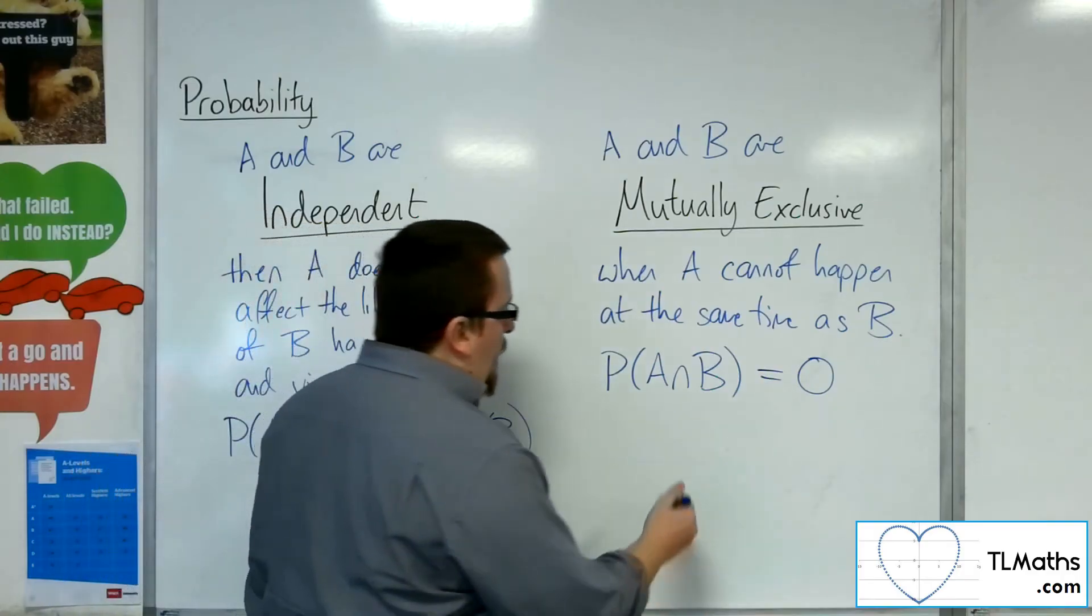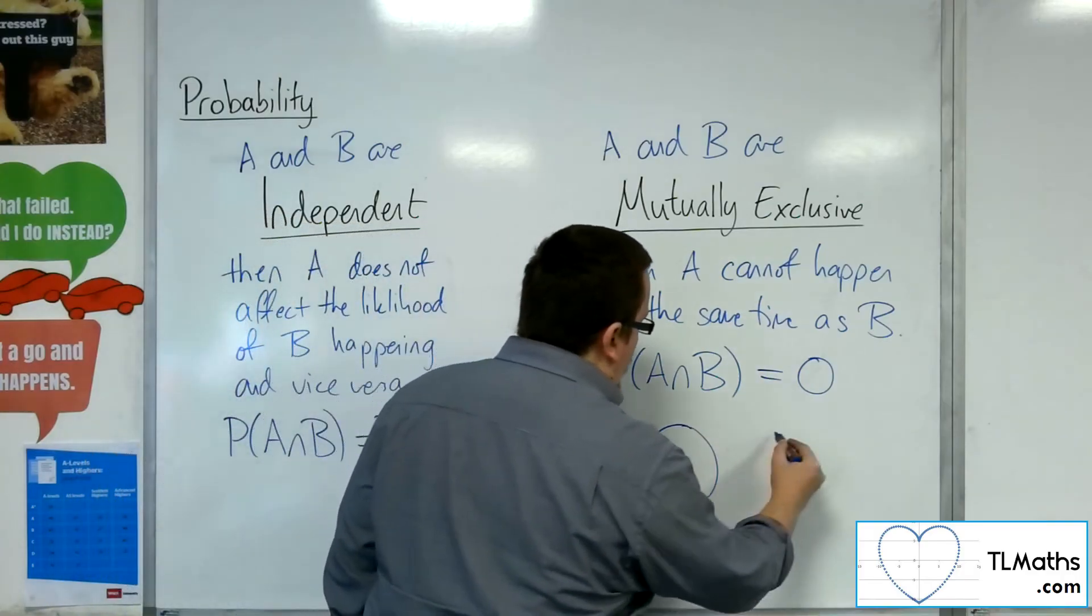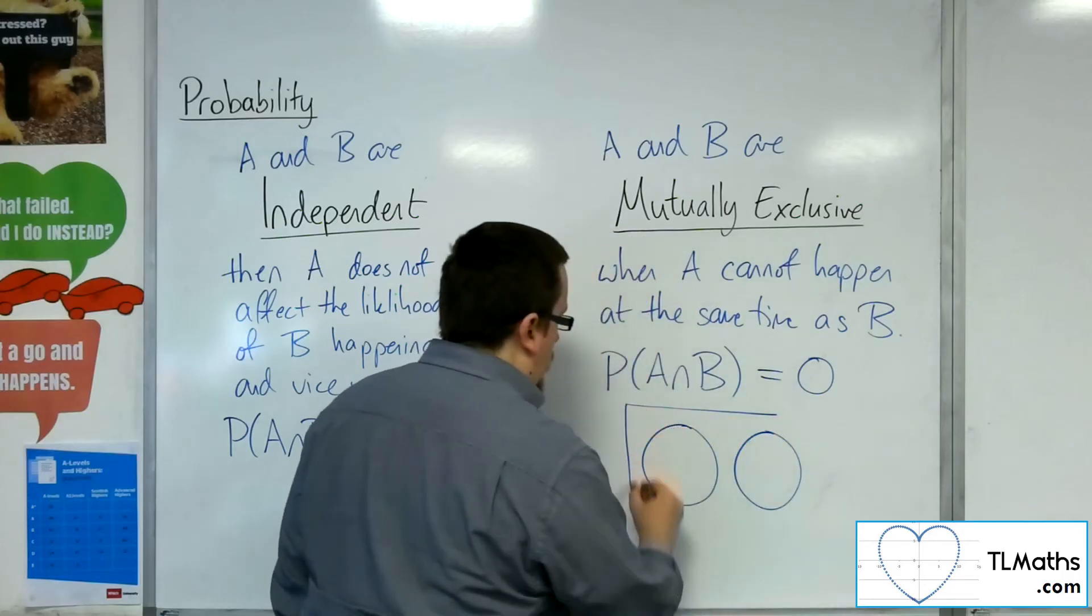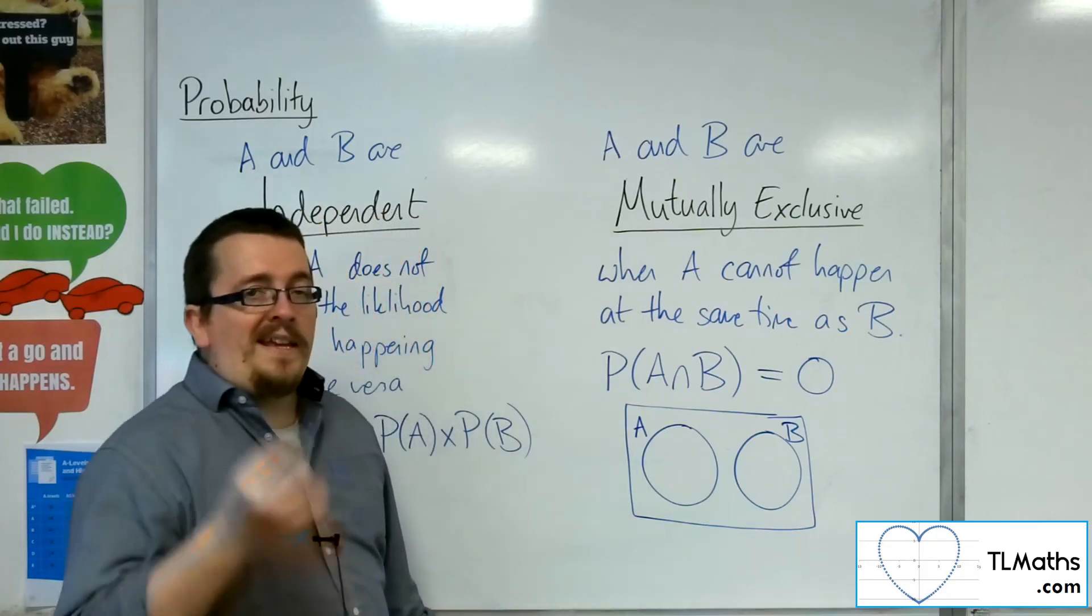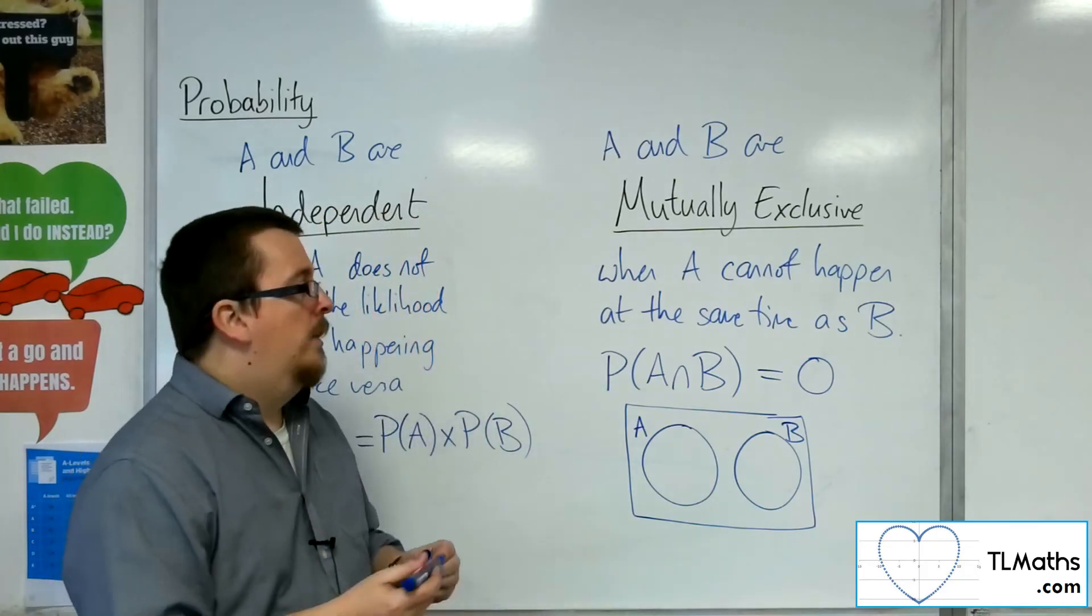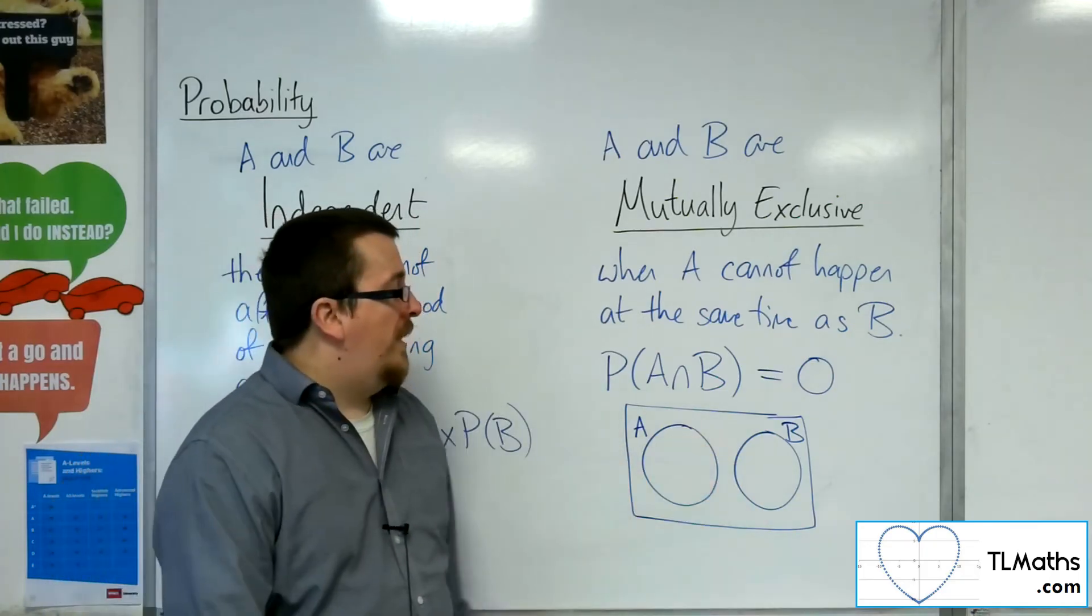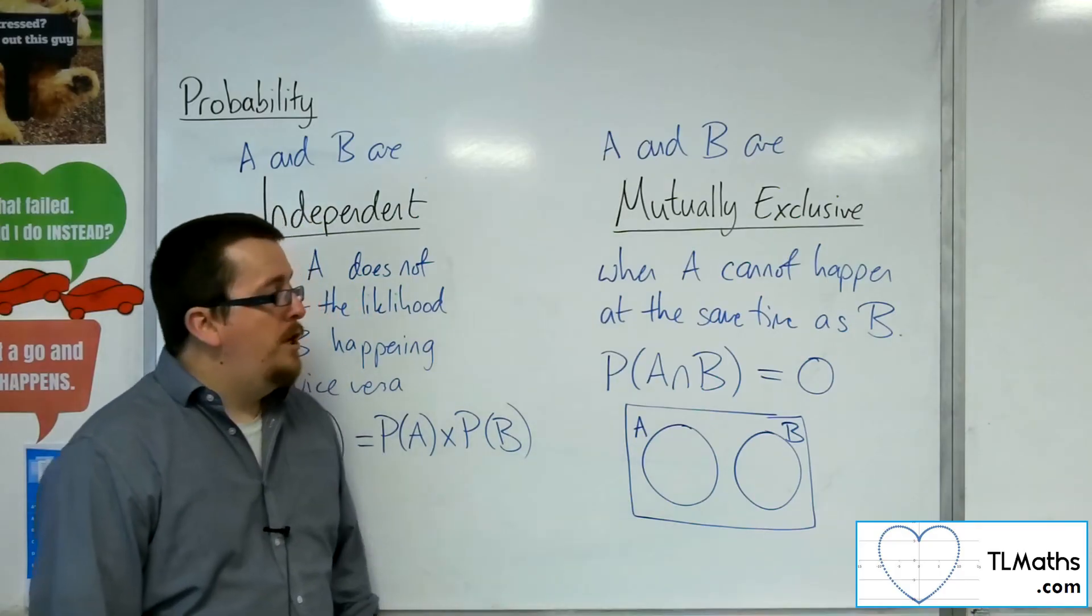If you were to draw this as a Venn diagram, it would look like this. There is no overlap of the two circles. They cannot happen at the same time. And so that represents two events that are mutually exclusive.